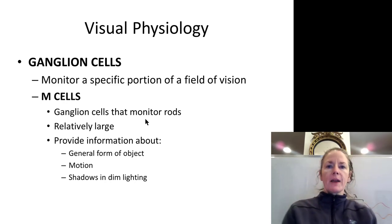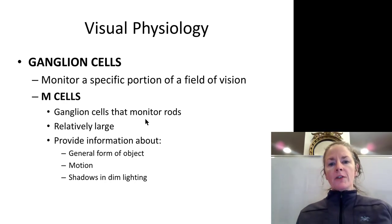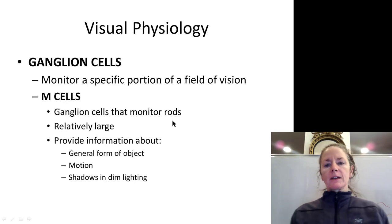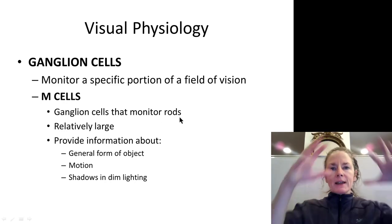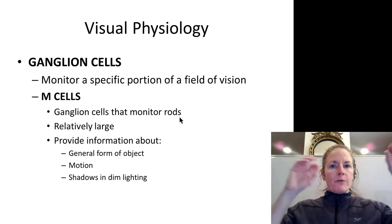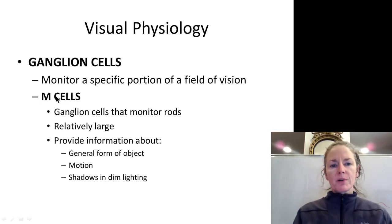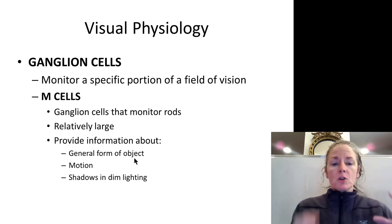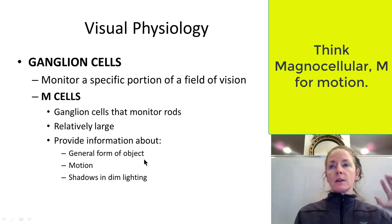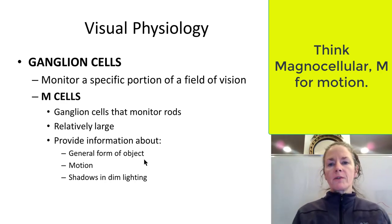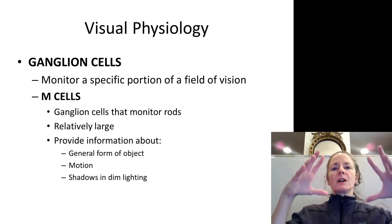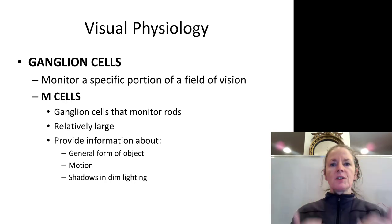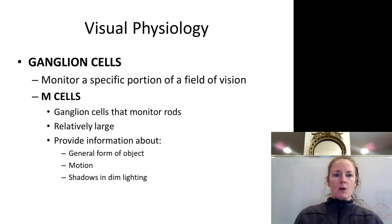We have different types of ganglion cells, going back to the idea of receptive fields. We have magnocellular, or M cells — large ganglion cells that monitor rods and receive a lot of converging information, with four, five, or six rods all bringing information to them. These have large receptive fields and are not good for visual acuity, but are very good for motion, shadows, dim lighting, and things moving in the periphery. It's like a 10-megapixel resolution — a large, grainy receptive field.